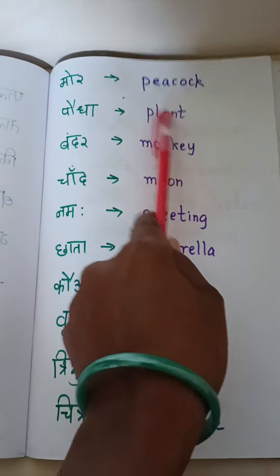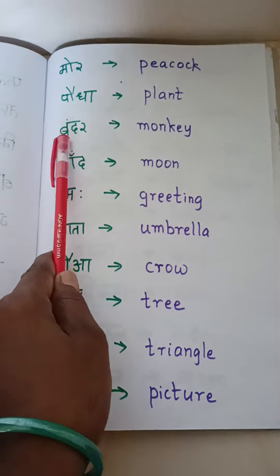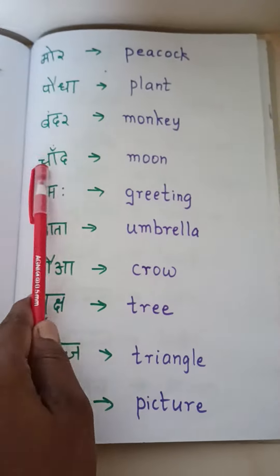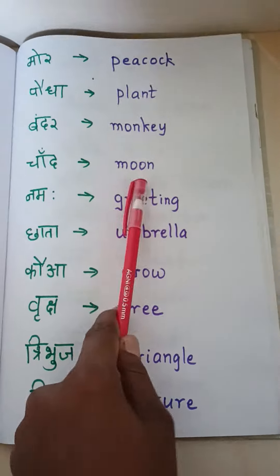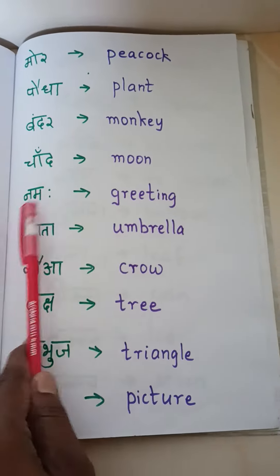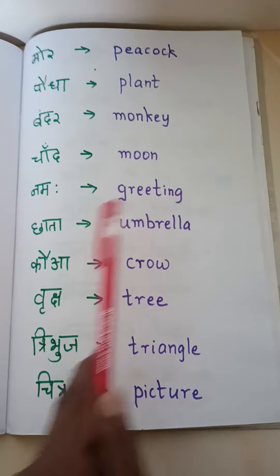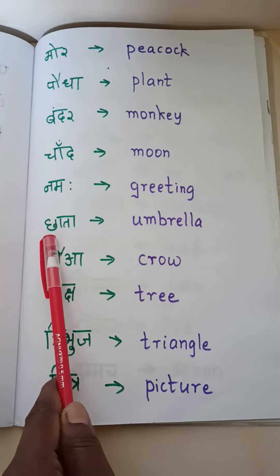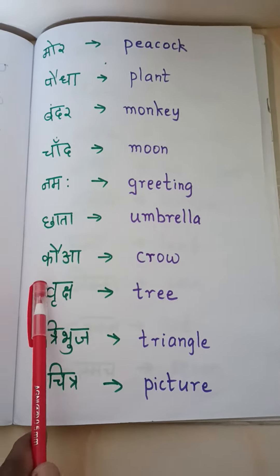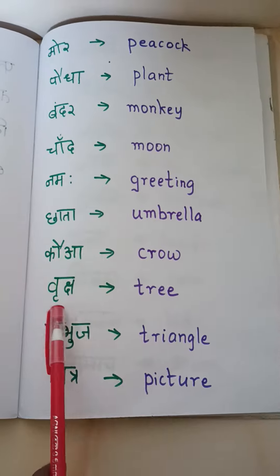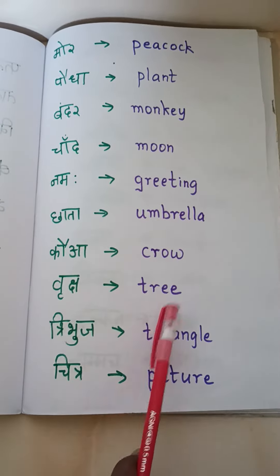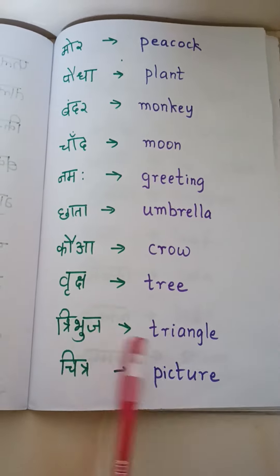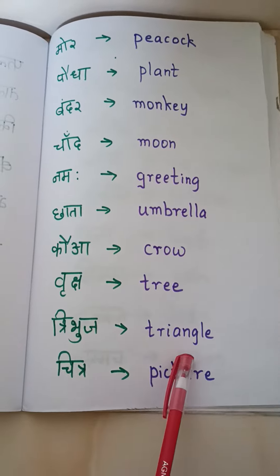Paudha — plant. Bandar — monkey. Chant — moon. Nama — greeting. Chatha — umbrella. Kauwa — crow. Rooksh — tree. Tribhuj — triangle.